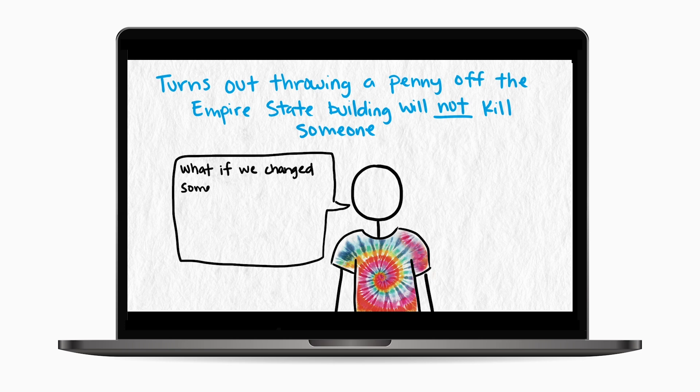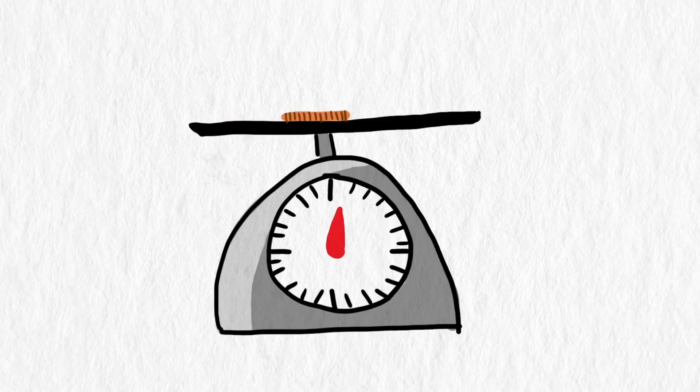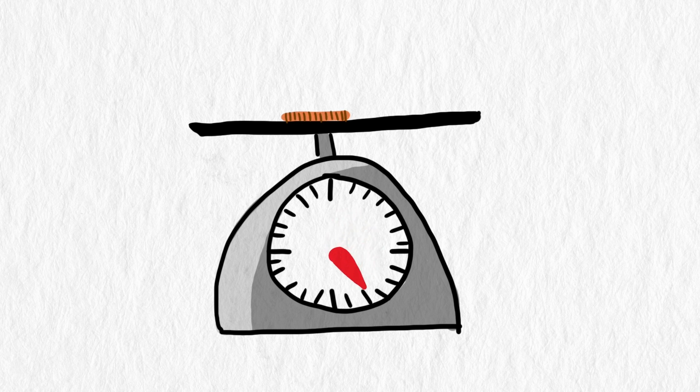But what if we change some factors to this problem? Could we get the falling penny to become more dangerous, even lethal? For example, what if our penny was denser? What if the penny fell on its edge instead of tumbling?